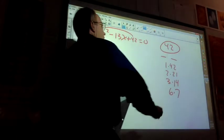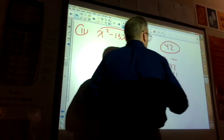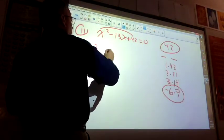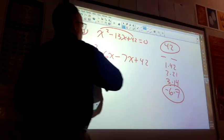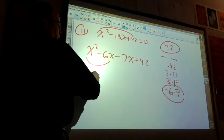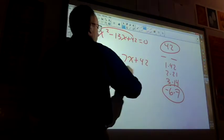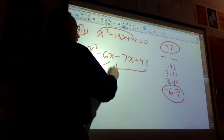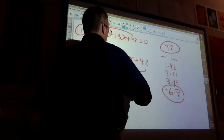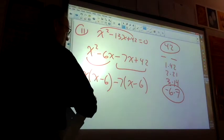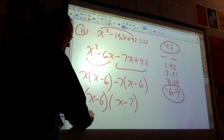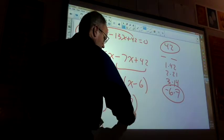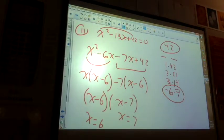So I get x squared minus 6x minus 7x plus 42. What do I have in common here? What do I have in common here? A negative 7, right? So I get x equals 6 and x equals 7. So if I plug either of those into the original, the whole thing becomes 0.